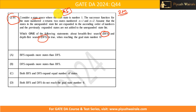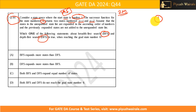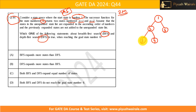Let's read the question first. Consider a state space where the start node is number 1, so my starting state is number 1. The successor function for state number n returns two states: n plus 1 and n plus 2. For example, from state 1 the successors are 2 and 3. If I expand 2, I get 3 and 4. If I expand 3, I get 4 and 5.